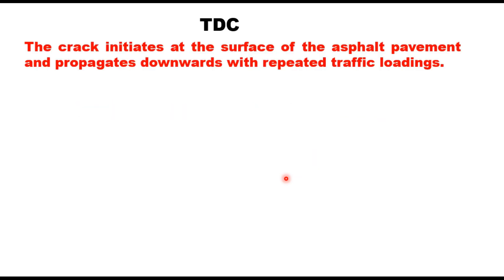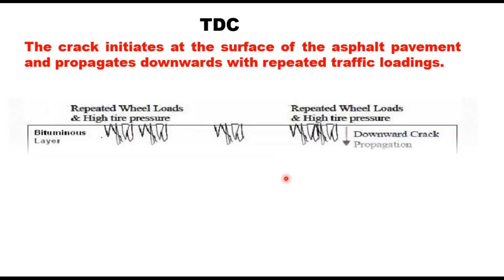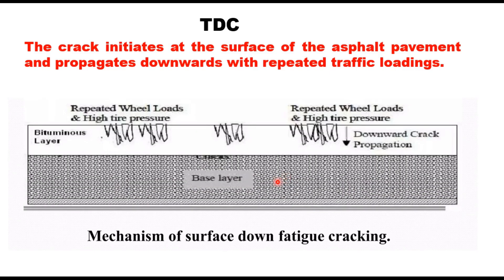Top-down crack initiates at the surface of the asphalt pavement and propagates downwards with repeated traffic loading. These cracks usually appear at the edge of the wheel path, and some researchers believe that top-down cracking has resulted from new tire design and high tire pressure being used. The contact pressure is higher at the edge of the tire, which causes shearing of the pavement surface.